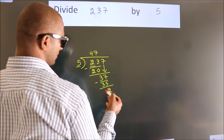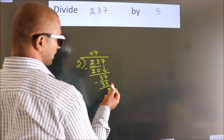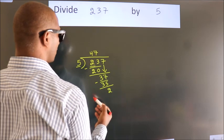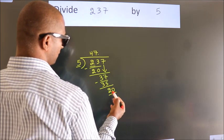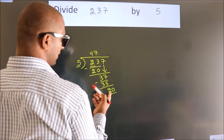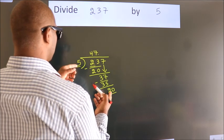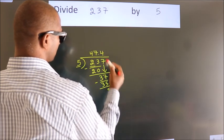After this, no more numbers to bring down. So what we do is, we put a dot and take 0, giving us 20. When do we get 20 in the 5 table? 5 fours, 20.